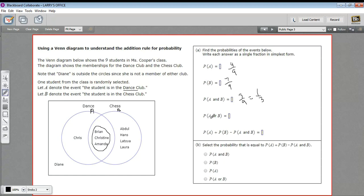And then P here is P of A or B. So the probability of being in either of the clubs, and that's all eight of these students, everyone except Diane. So that's eight out of nine.